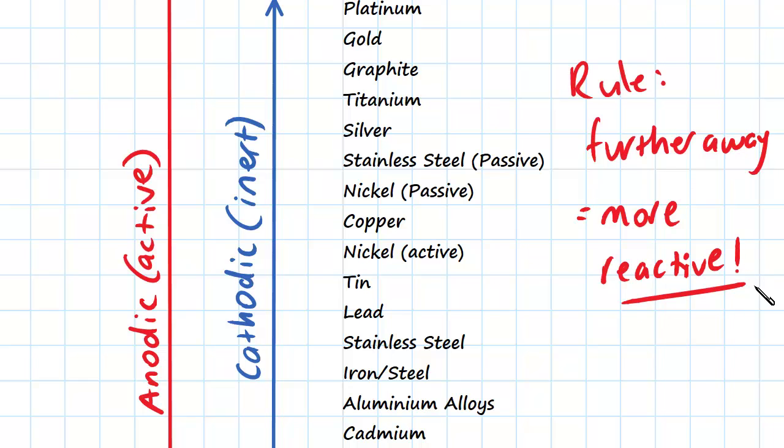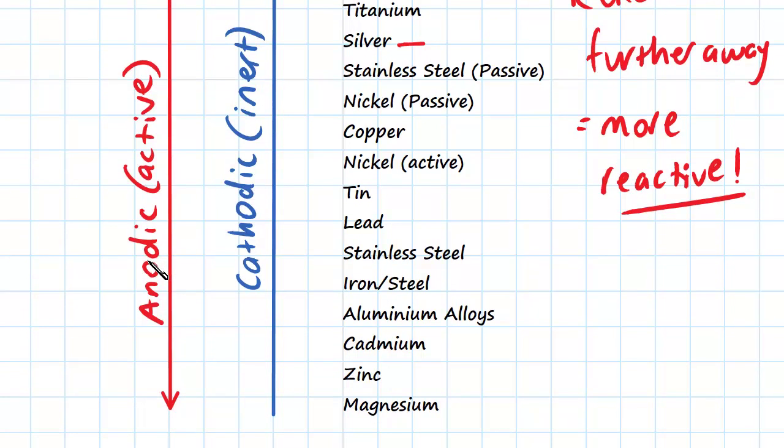For example, if we took silver and something like aluminum alloys, it's going to be very reactive because there's quite a big difference between them. Whereas if we take something like lead and some passive nickel, it's going to have less of a reaction. It's still going to form a galvanic cell, but it's going to have less of a reaction.